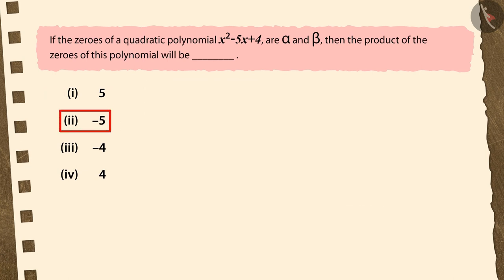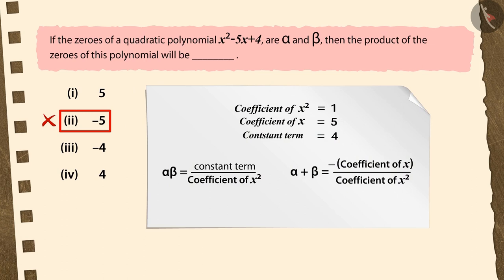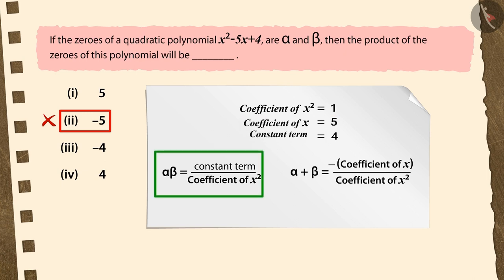If you have selected the second option, then your selection is incorrect. There are two reasons. First, while writing the coefficient of x, you forgot to prefix it with negative sign. Second, instead of using the formula for product of zeros here, you have used the formula to find their sum.